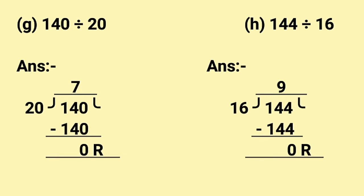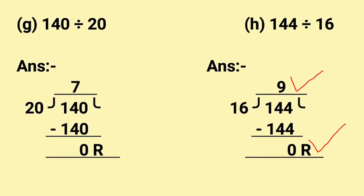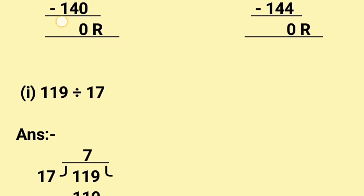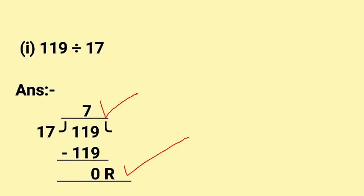G part is 140 divided by 20. Now 2 sevens are 140. Now 140 minus 140 gives us 0 remainder, so quotient is 7. H part is 144 divided by 16. We know 16 nines are 144. Now 144 minus 144 gives us 0 remainder, so we have quotient 9. I part is 119 divided by 17. We know 17 sevens are 119. Now 119 minus 119 gives us 0 remainder, so we have quotient 7.